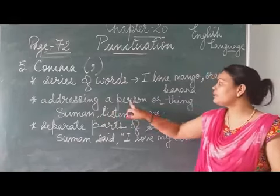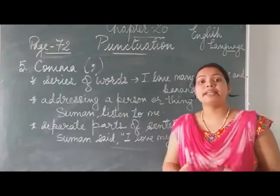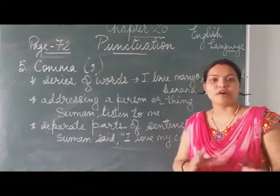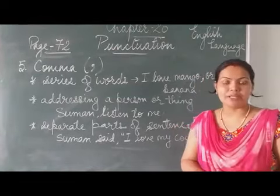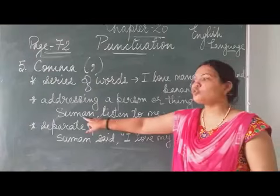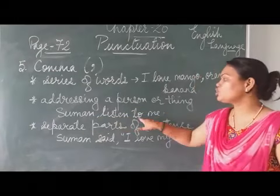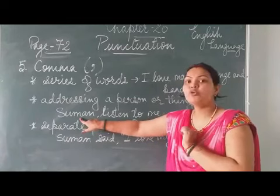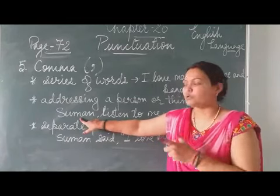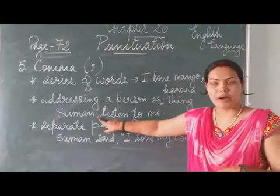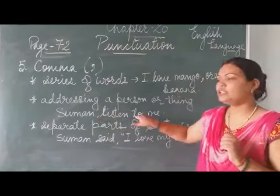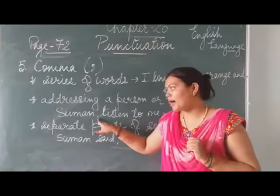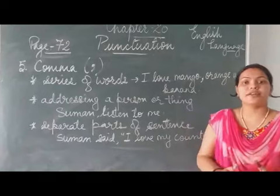Next, addressing a person or thing. Whenever we are addressing any person or anything, at that time also we use comma after the word — after the name of that person or thing. For example, 'Suman, listen to me.' Here I am talking to Suman and addressing her, so after 'Suman' I will give one comma: 'Suman, listen to me.' Because here we are addressing a person.